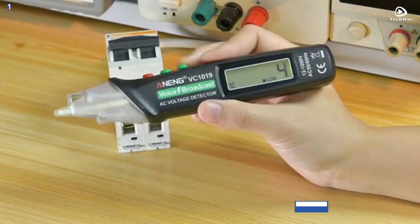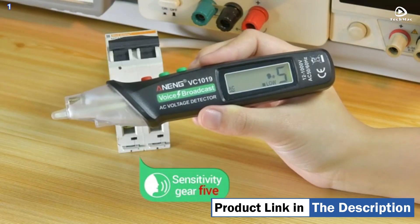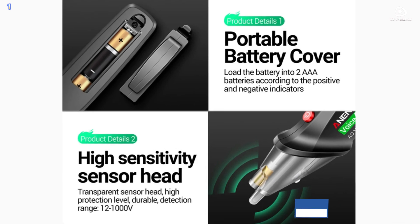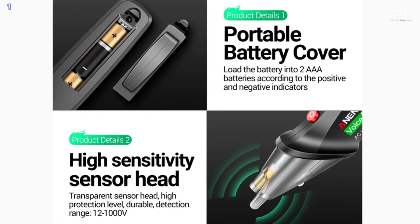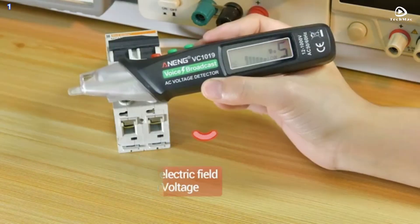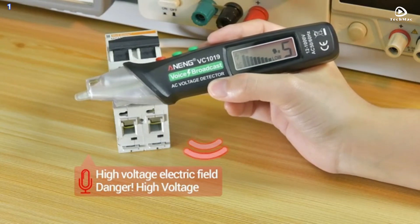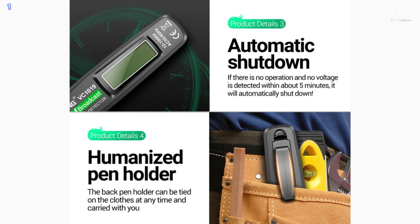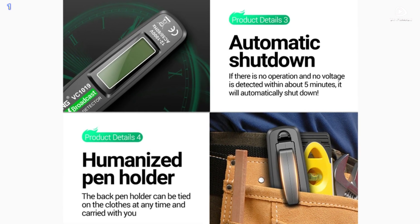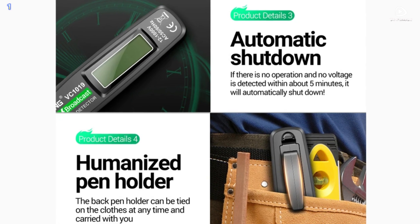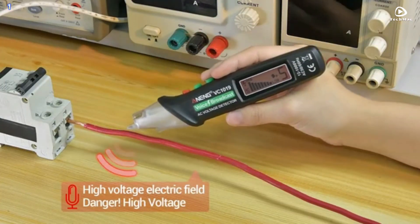Convenient to use: to use the broadcast tester, just touch the tip to the terminal strip, socket, or power cord. Scope of Use: The Positioning Voltage Tester can be used to test the design of power cables, circuit breakers, sockets, junction boxes, fuses, etc.